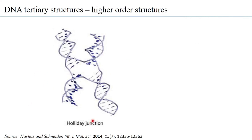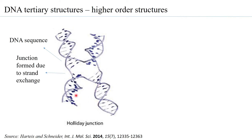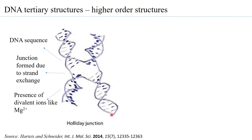A Holliday junction is a higher-order structure where two DNA duplexes form a four-strand branch point. Holliday junction formation can be sequence-dependent, with strand exchange happening at specific sequences. These junctions are stabilized by divalent ions like magnesium and are referred to as cruciform structures in DNA. The Holliday junction itself can be a site for specific proteins to interact.